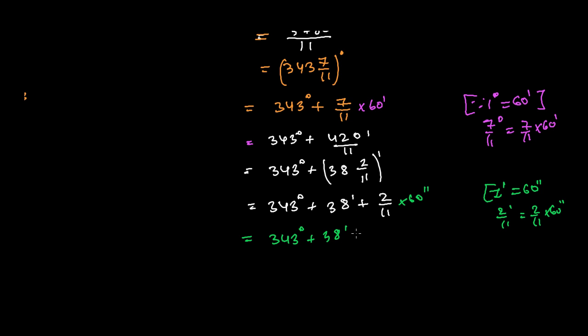Finally you'll get 343 degrees plus 38 minutes, and this will be 2 times 60, 120 divided by 11. Let me do it in the calculator: 120 divided by 11.